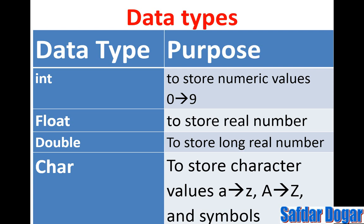Data types means that if you want to store an integer value, the keyword will be 'int'. To store a numeric value from 0 to 9 — numeric values like 55, 65, 200, 206 — these are integer values. If you want to store them in a variable, then we use the data type 'int'.